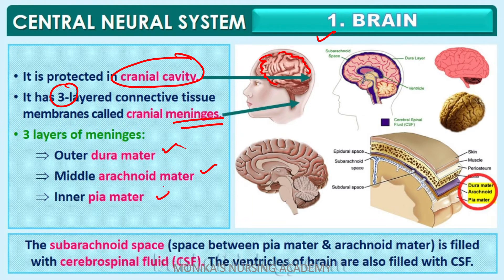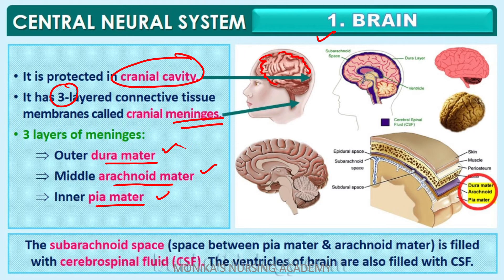The first layer is the outer one, termed as dura mater. The middle one is the arachnoid mater, and the inner one is the pia mater. The dura mater is the outermost and hardest layer in comparison to the arachnoid and pia mater, and it is much more dense compared to the middle and inner meninges.